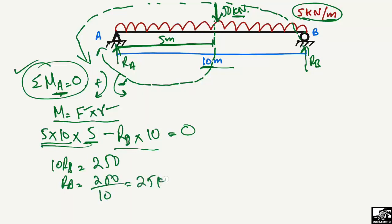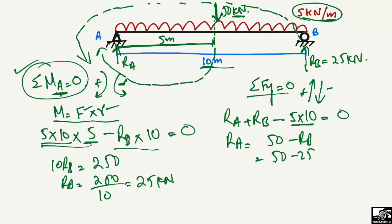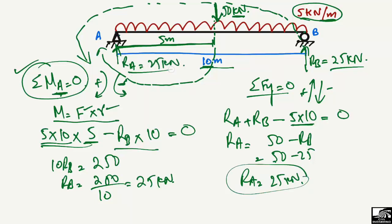Dividing 250 by 10, we get RB = 25 kN. To find RA, we use the summation of vertical forces equal to zero, with upward forces positive and downward forces negative. RA + RB − (5 × 10) = 0, so RA = 50 − RB = 50 − 25 = 25 kN. We get the same result as Method 1, confirming RA = 25 kN using the equilibrium equations.